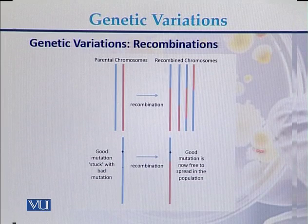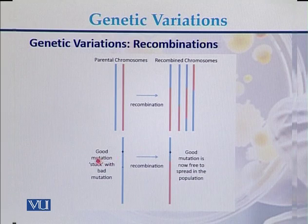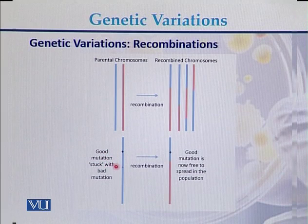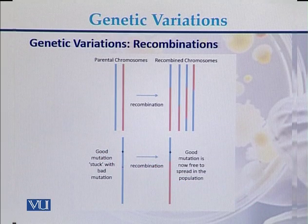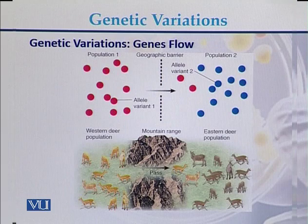During genetic variations there can be good mutations and there can be bad mutations. Good mutations usually spread throughout the population or throughout the individuals of a population.